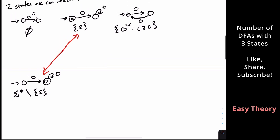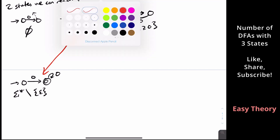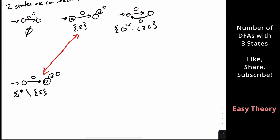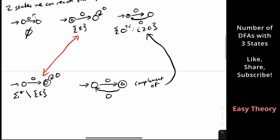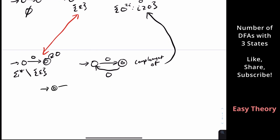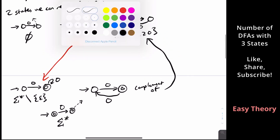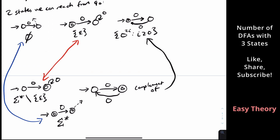The other possibility is similar to the third machine we described: we go to the second state and then come back. This is the complement of the even-length strings machine — it's exactly the same machine but with final and non-final states flipped. If both states are final, then no matter what transitions we use, we must accept everything, giving sigma star again — another complement relationship.